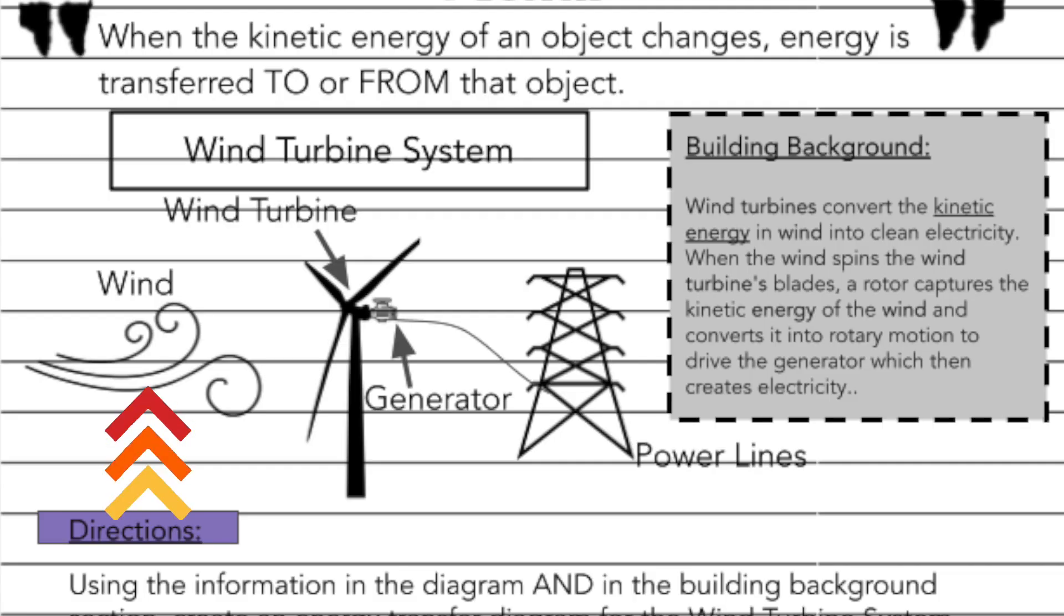When the wind spins the turbine's blades, a rotor captures the energy of the wind and converts it into rotary motion that drives the generator, which then creates electricity.